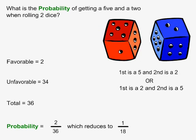In this example, what is the probability of getting a 5 and a 2 when rolling two dice? There are two ways that this can happen. If I use two colored dice, I can illustrate this. If the red die has a 5 and the blue die has a 2, that is a different case than if the blue die has a 5 and the red die has a 2. The number of favorable cases is therefore 2.